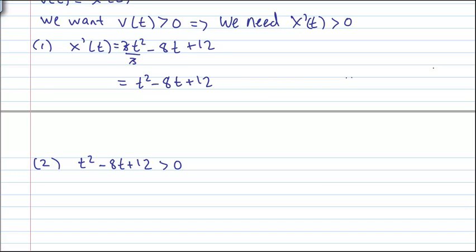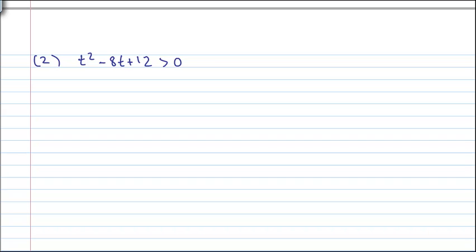So in order to find these intervals, it is necessary to find the zeros of this function. Because a zero, especially for a quadratic function, represents where it will go from positive to negative, or vice versa. So let's factor this out. We need two numbers whose sum is negative 8, and whose product is 12. It'll be negative 6 and negative 2. So we get t minus 6 times t minus 2 is greater than 0.